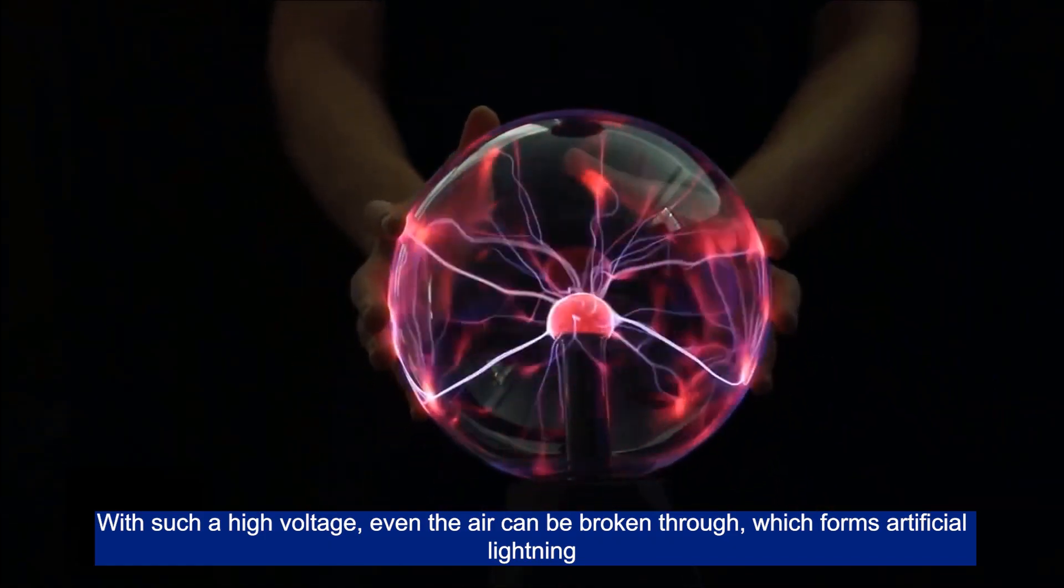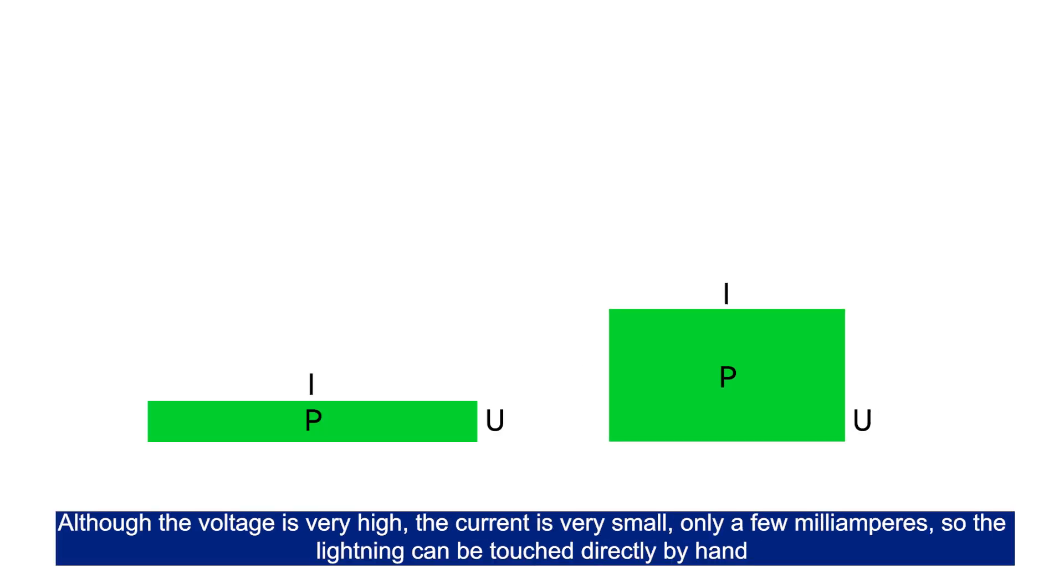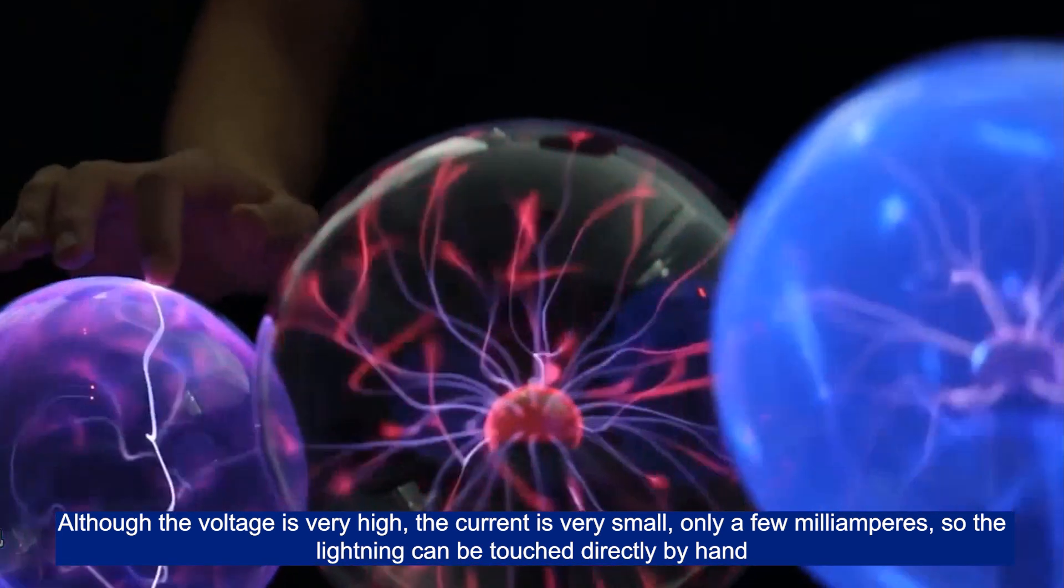With such a high voltage, even the air can be broken through, which forms artificial lightning. Although the voltage is very high, the current is very small, only a few milliamperes, so the lightning can be touched directly by hand.